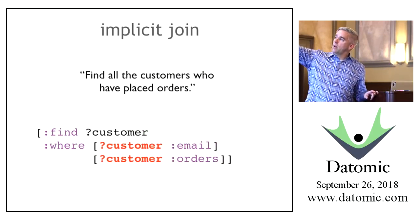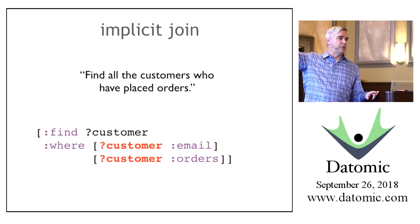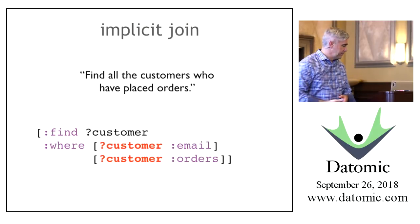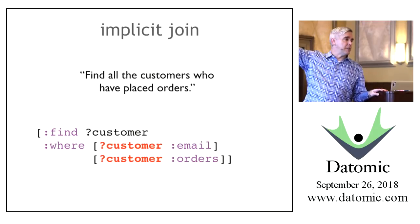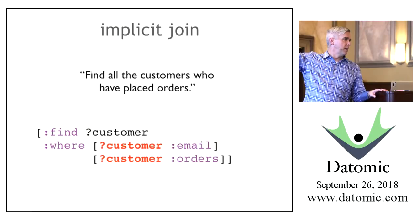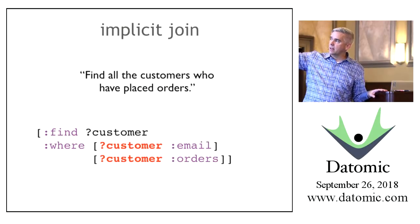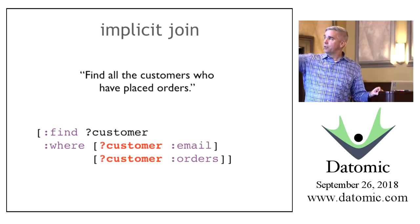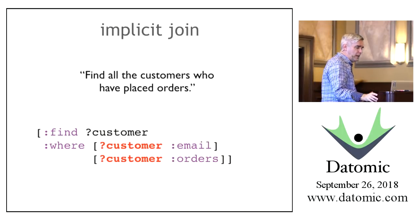Any time you have the same variable appearing in more than one clause, both clauses must match for that variable—which means this is a join. If 100 customers had email but only 20 had placed orders, the first clause would find everybody with an email (100 customers), and the second clause would limit that to only those with orders (20 bound). Each clause further limits the result, joining as necessary.